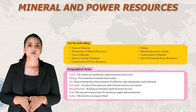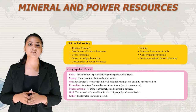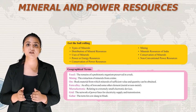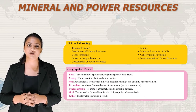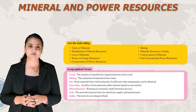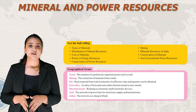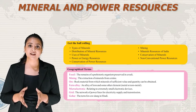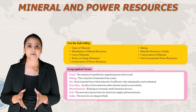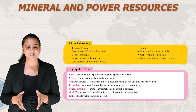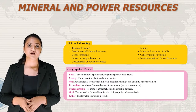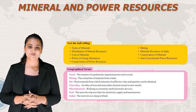Fifth, micro-electronic — it refers to relating to extremely small electronic devices. Sixth, grid — the network of power lines for electricity supply and transmission is known as a grid. Eighth, gober — the term for cow dung in Hindi.